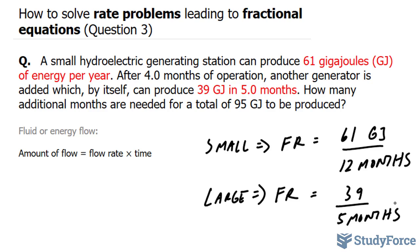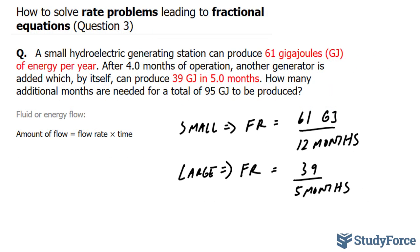So now that we have their flow rates, we also have the time in which this generator has been running. We are told that this generator has been running four months longer than the one that is added next. So to represent its time, we have to write down t plus four months. And the time for this one will simply be t.